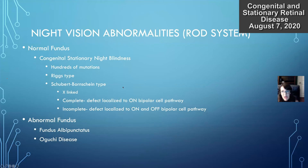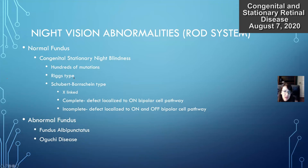Night vision abnormalities, attributed to the rod system, are broken down into normal fundus and abnormal fundus. With normal fundus, you have congenital stationary night blindness (CSNB). There are hundreds of mutations attributed to this condition, broken down into different types — the Riggs type and Schubert-Bornschein type. The book covers complete and incomplete forms, which are X-linked. The complete form is localized to the ON bipolar cell pathway, and the incomplete involves both ON and OFF bipolar cell pathways.